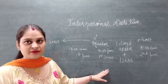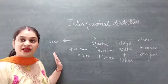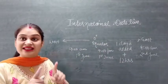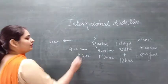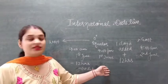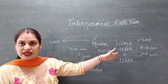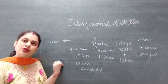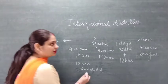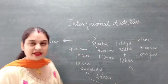Now, if that same person wants to travel from east to west — reversing their direction — one day, or 12 hours, is deducted. So when crossing from east to west, the time is 9 AM and the date goes back to 1st June. In total, there is a change of 24 hours depending on the direction of crossing.